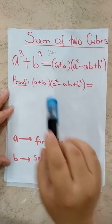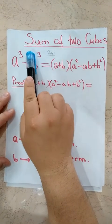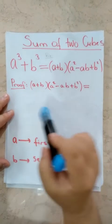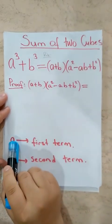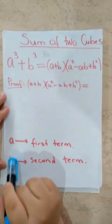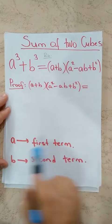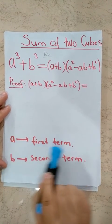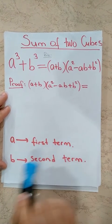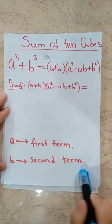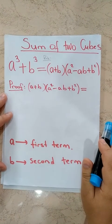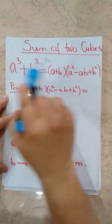Now again, we have another new topic here: sum of two cubes. Let A and B be two terms in an algebraic expression, where A is the first term and B is the second term. And we have a rule here, look.